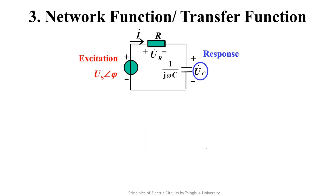The third frequency characteristic is about a new concept. When we study the circuit as a system, we have the so-called network function or transfer function, which is the ratio of a certain response over the excitation. This is a common method for single-input single-output systems, because once you know the transfer function, for a new excitation you can quickly find the response by multiplying the excitation by the transfer function. Here, the excitation is the voltage source and the response is the capacitor's voltage, which is easy to solve using the voltage division formula.